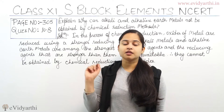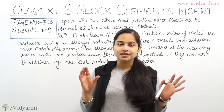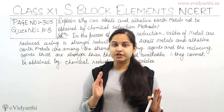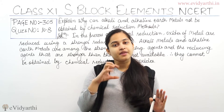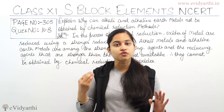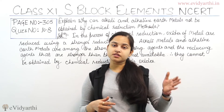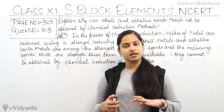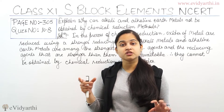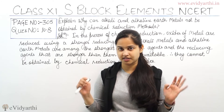In the process of chemical reduction, what happens is that oxides of metal — the metal oxides — they are reduced using a stronger reducing agent. This is what happens under the chemical reduction process.